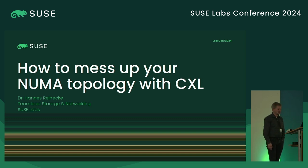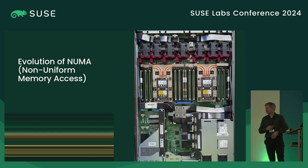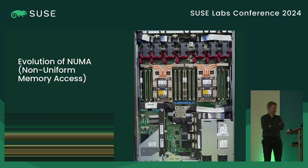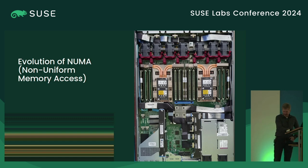The topic today is how to mess up NUMA topology with CXL. One of the main areas we have been focusing on in recent years is trying to get the performance of the storage layer up to speed — matching what the hardware actually can do. It turns out this is a surprisingly hard topic, and what is more surprising is that you now suddenly have to worry about hardware details.